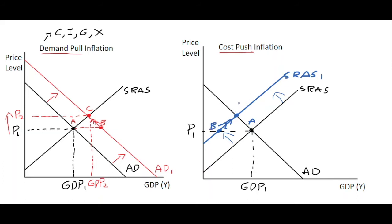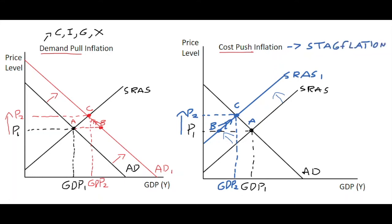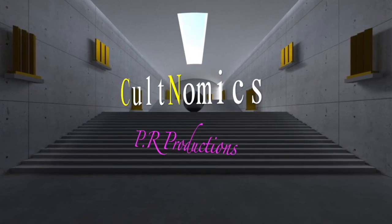Right after this shock, there is excess demand and a lack of supply putting upward pressure on the price level, causing us to go from A to B and up to point C. At point C we see a new price level P2, which is higher than the initial P1, and the GDP level has fallen to GDP2. This specific situation is called stagflation — the economy is stagnating so GDP falls, yet there is inflation as the price level increases. This is cost-push inflation. Hope to see you back at Cultnomics soon, bye for now.